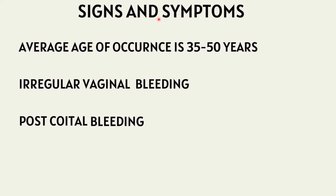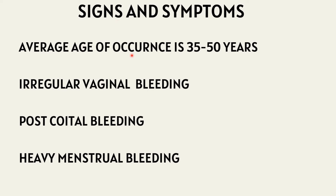The average age of occurrence of cervical cancer is 35 to 50 years — commonly seen in women in the child-bearing period of life, with pre-cancerous lesions occurring 10 to 15 years earlier. Important symptoms include irregular vaginal bleeding and post-coital bleeding, which is a very peculiar and significant symptom that must not be ignored. Heavy menstrual bleeding is also seen.